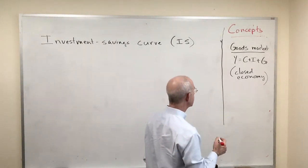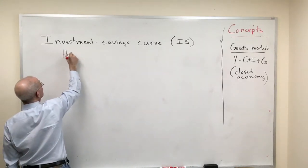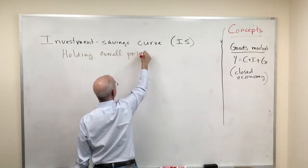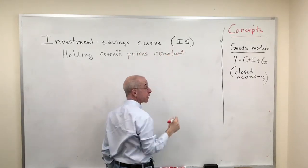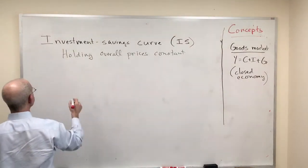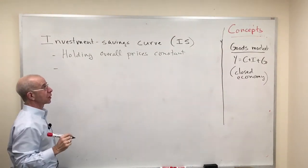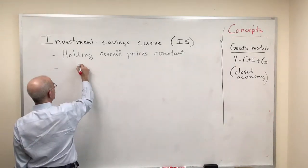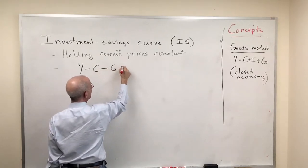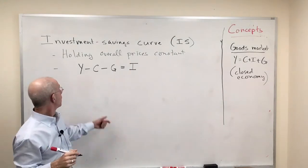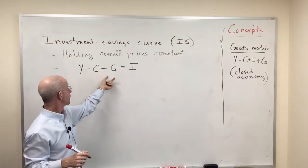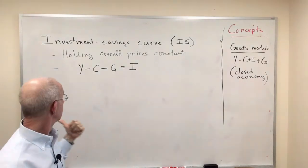We're going to do this at first holding overall prices constant. The standard IS story begins with holding prices constant — that can be adjusted, but let's do that for the moment. We can rewrite the goods market equilibrium relationship as: national income minus consumer spending on goods and services minus government spending on goods and services equals investment.